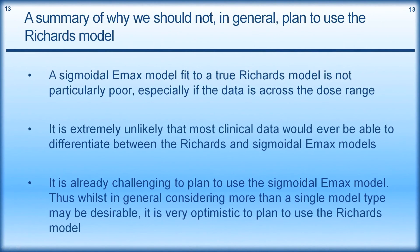So a summary of why we should not, in general, plan to use the Richards model. A sigmoidal Emax model fit to a true Richards model is not particularly poor, especially if the data is across the dose range. It is extremely unlikely that most clinical data would ever be able to differentiate between a Richards model and a sigmoidal Emax model. Those differences there are very, very small. So it would be very hard to get enough of a data set that would actually be able to challenge that reliably.